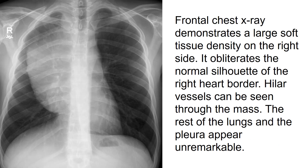This frontal chest X-ray demonstrates a large soft tissue density on the right side. It obliterates the normal silhouette of the right heart border. Hilar vessels can be seen through the mass. The rest of the lungs and the pleura appear unremarkable.